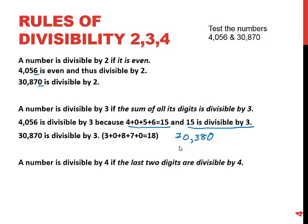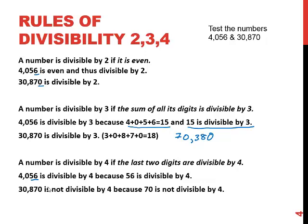A number is divisible by 4 if the last two digits are divisible by 4. So when we look at 4,056 the last two digits, 56, are divisible by 4. Therefore the whole number is divisible by 4. 4 will go into 4,056. 30,870 - to decide if that's divisible we'll look at the 70 and 4 will not go into 70, you can use long division or a calculator to confirm that, but 4 will not go into 70 so 4 will not go into 30,870.